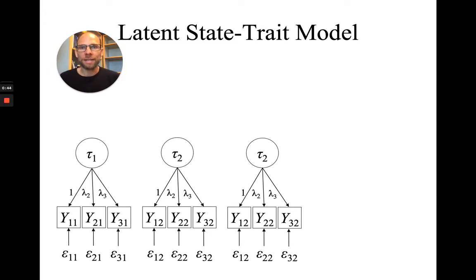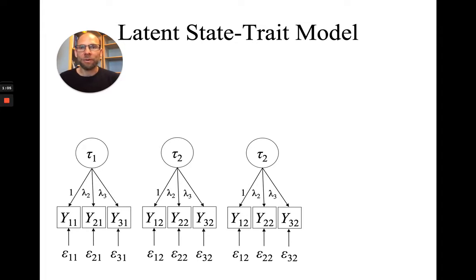In the latent state trait model as a hierarchical factor model, we have first-order factors that we call latent state factors. Those are indicated as tau 1, tau 2, and tau 3. In this design, we have three measurement occasions or time points and three measures or observed variables y_it at each time point.